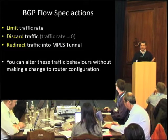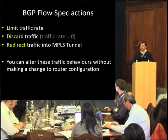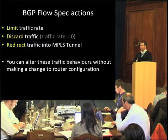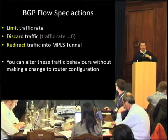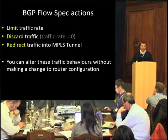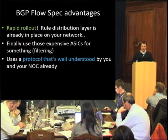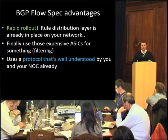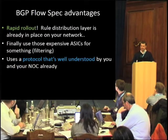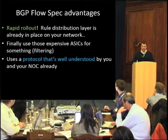What can you do when you identify a particular piece of traffic that matches those rules? Well, you can limit the rate of the traffic, you can discard the traffic altogether, or you can redirect the traffic into an MPLS tunnel for particular engineering reasons. But crucially, the killer app for this new feature is that you can alter the behavior of traffic without actually logging onto your routers and making a change — you're distributing these behaviors with a simple protocol that your network is already running today. It's very quick to roll out if you're already running BGP, and it allows you to use the hardware filtering features in your routers much more conveniently.